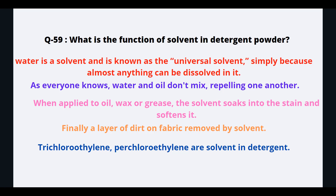What is the function of solvent in detergent powder? Water is a solvent and is known as a universal solvent, because almost anything can be dissolved in it. As everyone knows, water and oil do not mix, repelling one another. When applied to oil, wax, or grease, the solvent soaks into the stain and softens it. Finally, a layer of dirt on fabric is removed by the solvent. Trichloroethylene and perchloroethylene are solvents used in detergent.